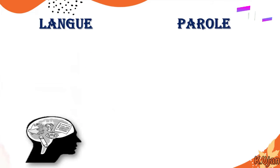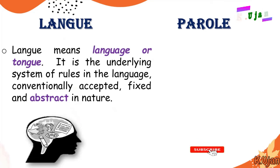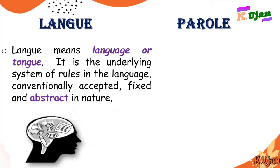We are going to talk about langue first. Langue means language or tongue — that is the obvious meaning. It is the underlying system of rules in the language: conventionally accepted, fixed, and abstract in nature. In other words, we must say grammar — fixed and abstract in nature. Abstract means grammar rules which are fixed in one's mind. For example, the rules of present simple tense in English language — that is exactly langue.